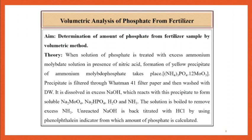Theory: When a solution of phosphate is treated with excess ammonium molybdate solution in the presence of nitric acid, a yellow precipitate of ammonium molybdophosphate is formed. The precipitate is filtered through Whatman-41 filter paper and washed with distilled water. It is then dissolved in excess NaOH, which reacts with the precipitate to form soluble Na2MoO4, Na2HPO4, H2O, and NH3.